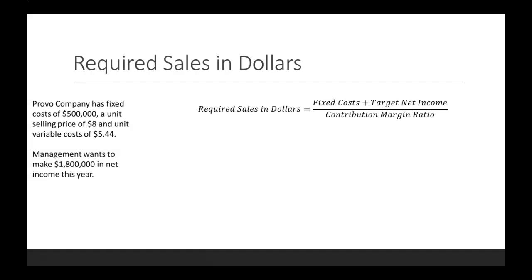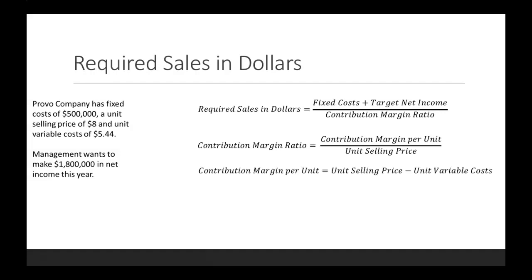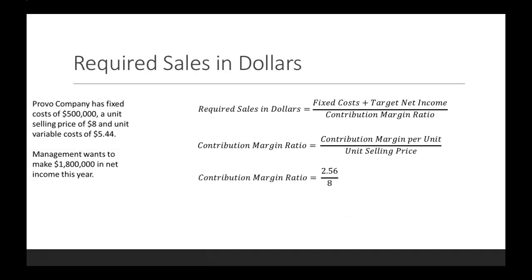The contribution margin ratio, we need to solve for first. Your contribution margin ratio is your contribution margin per unit divided by your unit selling price. But we don't have our contribution margin per unit yet, so we solve for that first — it's unit selling price minus unit variable costs. So $8 minus $5.44 gives us a contribution margin per unit of $2.56. Plugging that in: $2.56 divided by $8.00 gives us a contribution margin ratio of 0.32, or 32%.